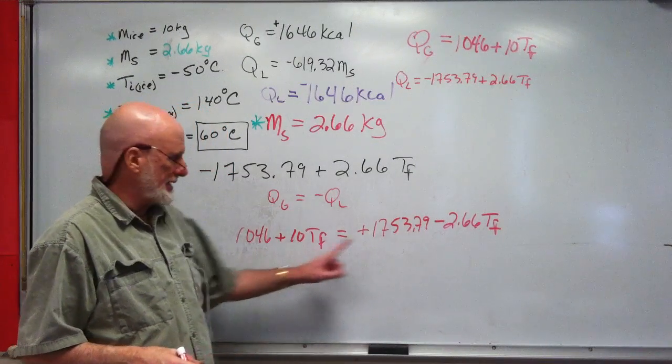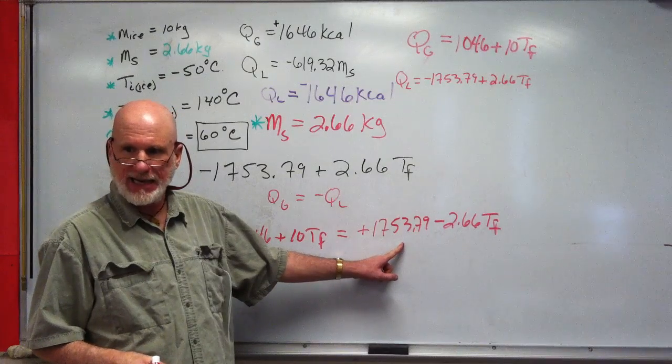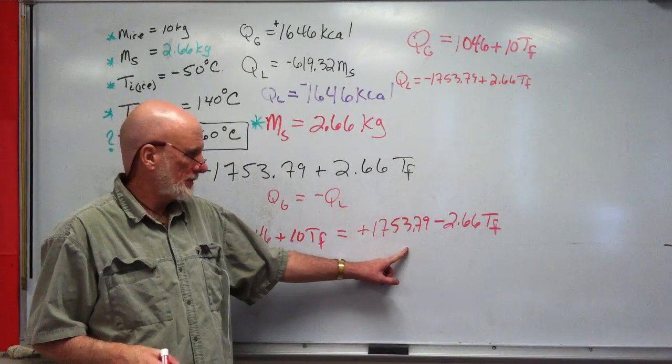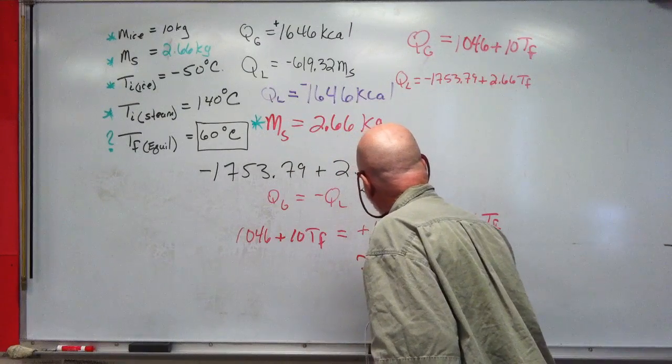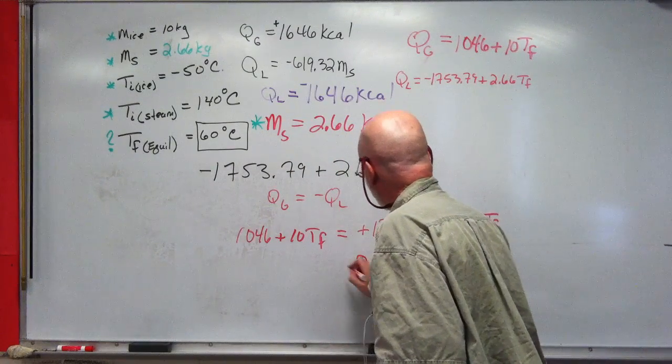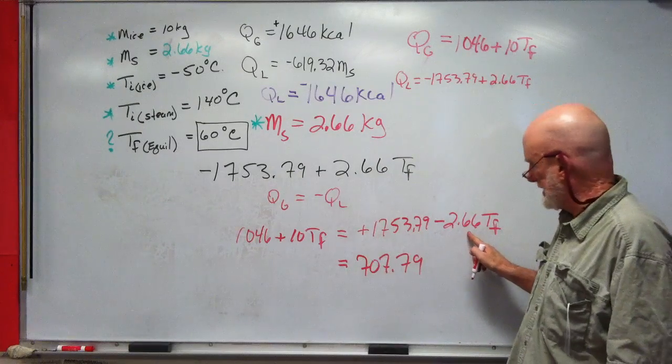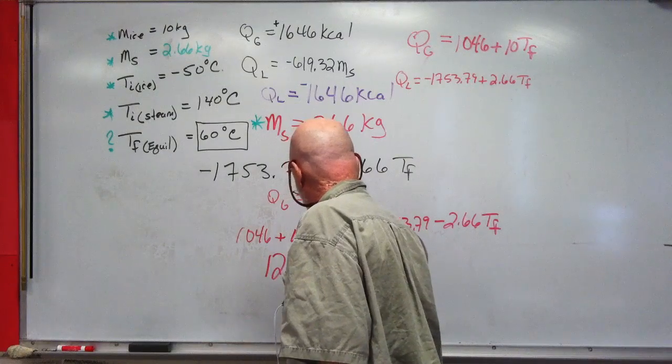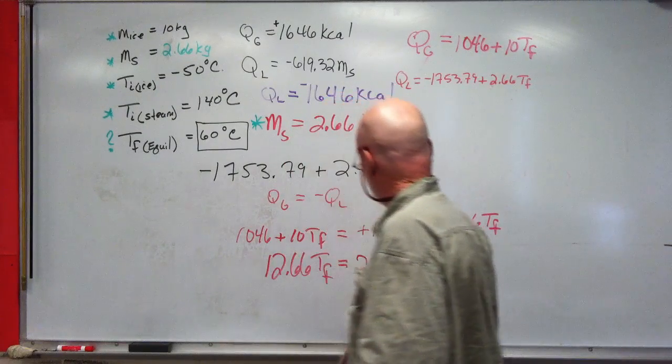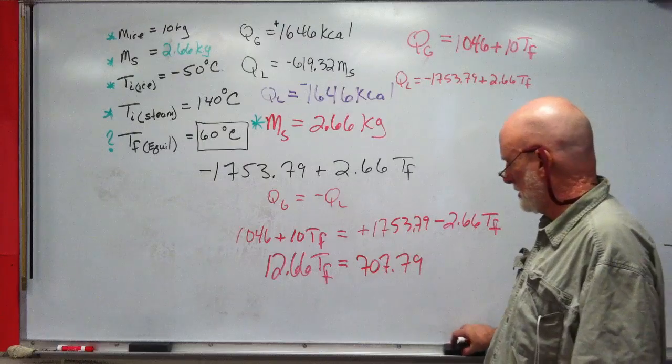Now subtract 1046 from both sides. What do you get on the right side? 707.79. And add 2.66 to both sides: 2.66 TF equals 707.79.